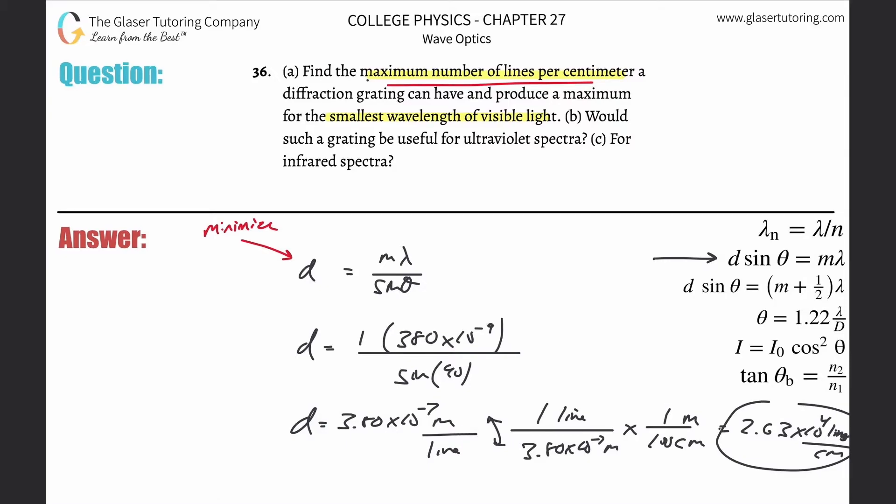So about 26,300. Letter b: Would such a grating be useful for ultraviolet spectra? To answer this, you need to know the spectrum here for ultraviolet light in terms of wavelength—it goes from 100 nanometers to about 380 nanometers. It changes ever so slightly depending upon the text or reference table you might be using.